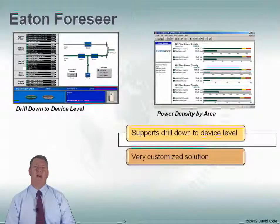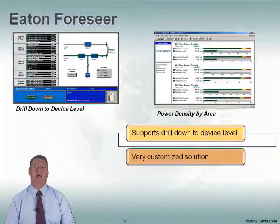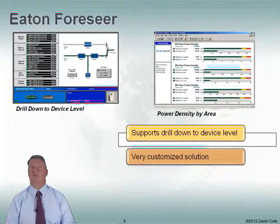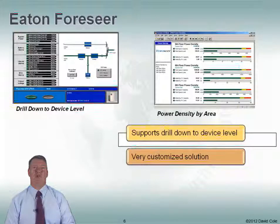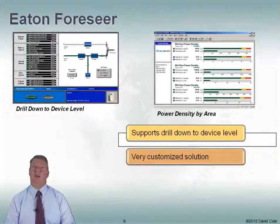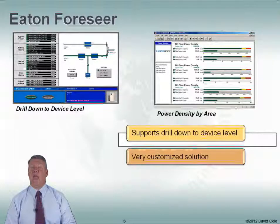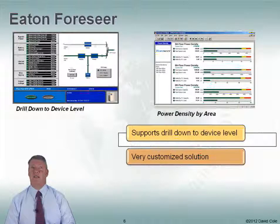One thing about Eaton Foreseer is it's a very customized solution. They'll come in and send an engineer who will spend some time with you on site and design a system exactly how you want it to be. The screens — like power density by area and drilling down to the device level — are customized screens designed specifically for each customer. When you get into a customized solution, you are using an engineer's time and you're going to pay for that. It can be a very expensive solution if you're building something extensive, and when you need support, you'll have to bring the engineer back out to add devices.